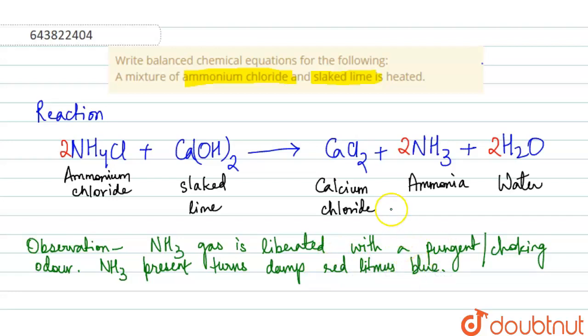Why do we write the word damp? Because NH3 does not have ions and it is not capable of turning red litmus blue, but NH3 when reacts with damp red litmus paper, the water and NH3 react to form NH4OH, and this NH4OH contains ions which helps in turning red litmus blue. This hydroxide turns red litmus blue. So this will be our observation and this is the reaction required.